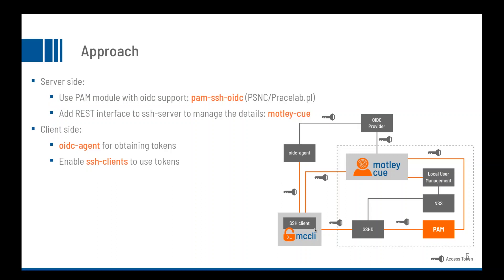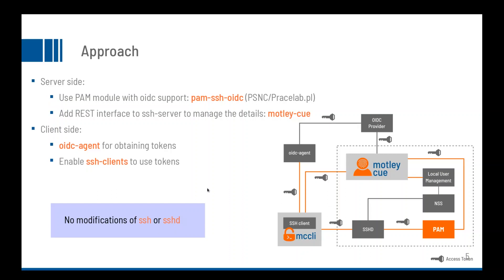Then the wrapper calls the SSH client and feeds the access token into the password field. That is then sent to the SSH daemon, to PAM. PAM verifies the access token with MertliQ, which of course verifies that with the OpenID Connect provider. And then login is granted. I want to stress it again: there are no modifications of the SSH client or the SSH daemon.